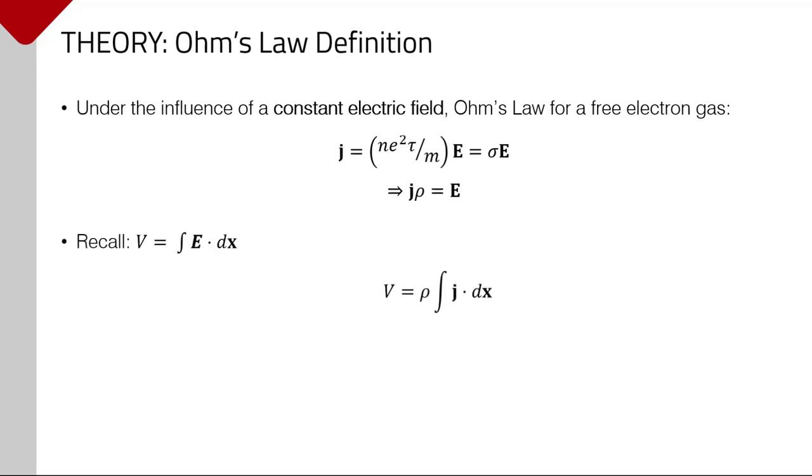Next, consider evaluating the potential difference between two points in this metal using that expression for the electric field. If the current can be assumed to have a uniform density, and the potential difference is measured along the direction of current flow, this expression can be simplified. The intrinsic resistivity rho and the geometric parameters of A and L can be combined into a term referred to simply as the sample's resistance R. This recovers the most common rendering of Ohm's law.